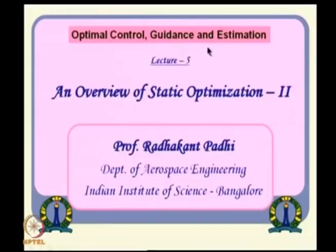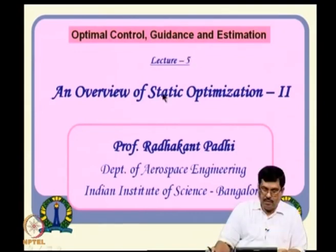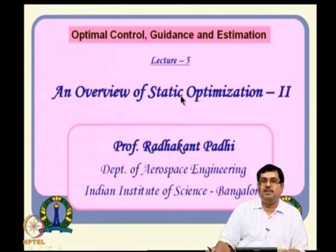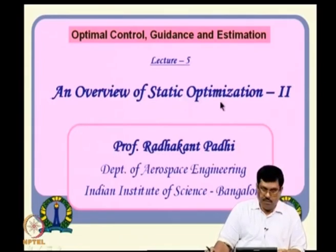Hello everybody. Let us continue our lecture series in this course, Optimal Control Guidance and Estimation. We are here at lecture number 5, where we are talking about some sort of overview of static optimization, and this is part 2 of the lecture.